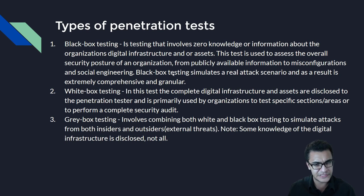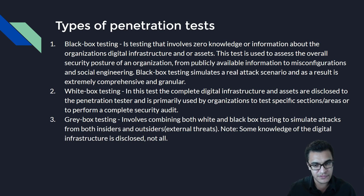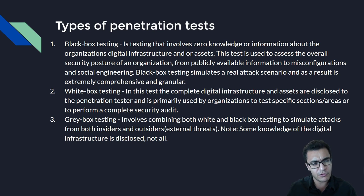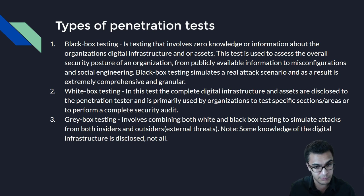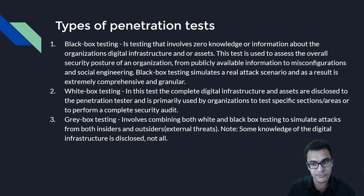We have black box testing, white box, and gray box testing. With black box testing, the pen testing team — the red team — does not know anything about the infrastructure or have any information about the organization's assets. They're essentially just given the company name and maybe a website and start from there. They have to perform reconnaissance, research on the company's employees, and find various weaknesses in the public domain. This test is used to assess the overall security posture of an organization from publicly available information to misconfigurations and social engineering. Black box testing simulates a real attack scenario and is extremely comprehensive and granular.